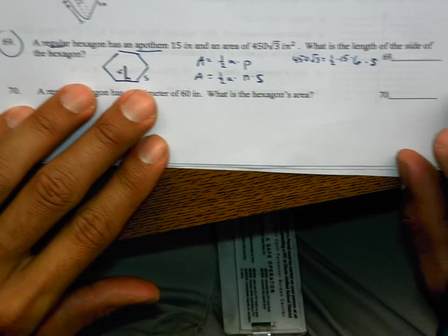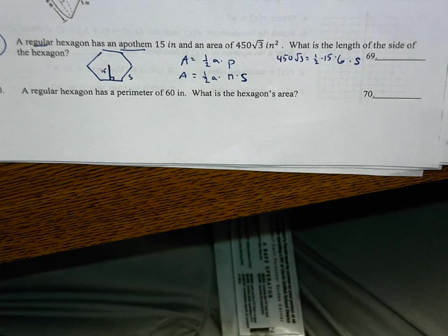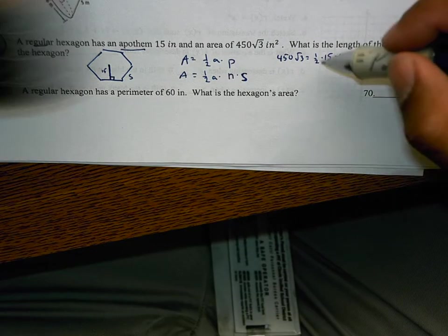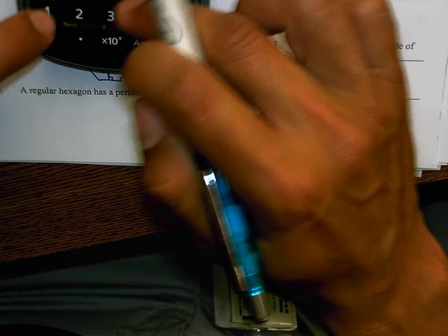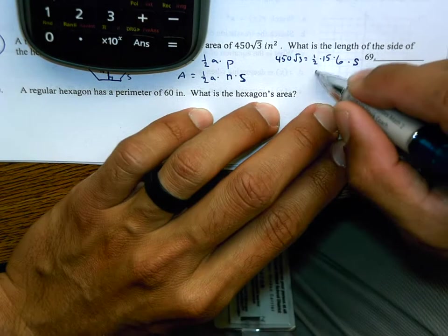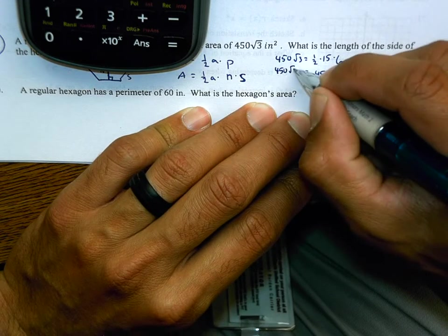Scoot that over just a little bit. Now if I want to get everything by itself, usually I simplify first. So I'm going to do half of 15 times 6. Half times 15 times 6. I'm going to do that first just so I know what that is. 45s equals 450√3.